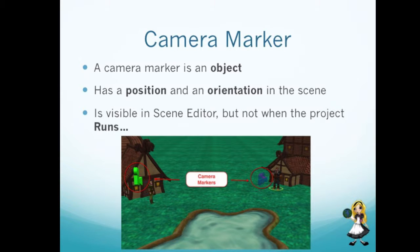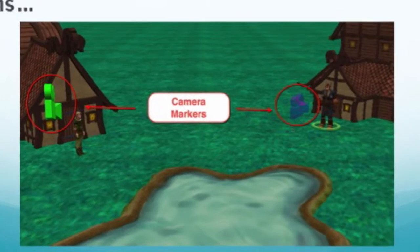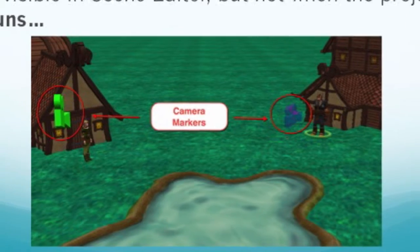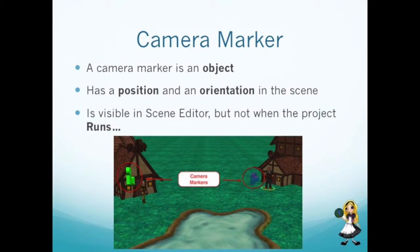A marker object is visible in the scene editor. However, when the user clicks the Run button to play an animation, markers are not visible during the animation.